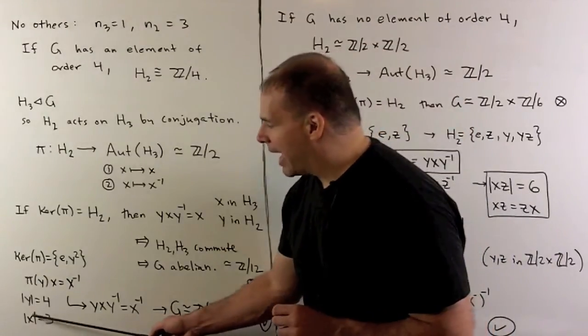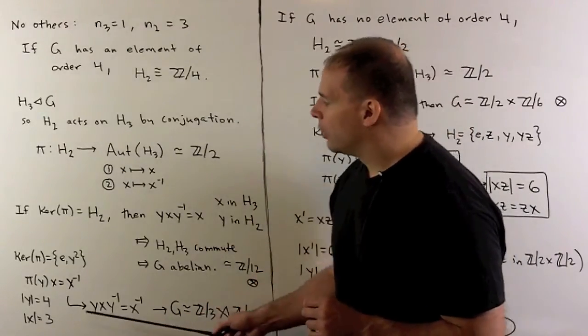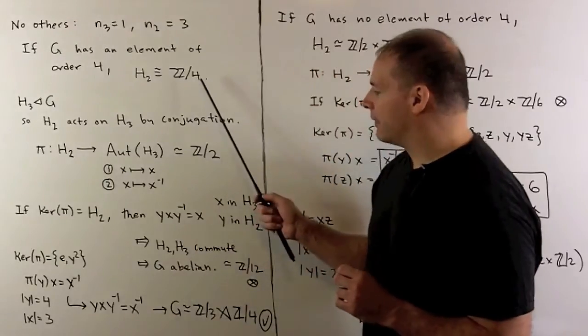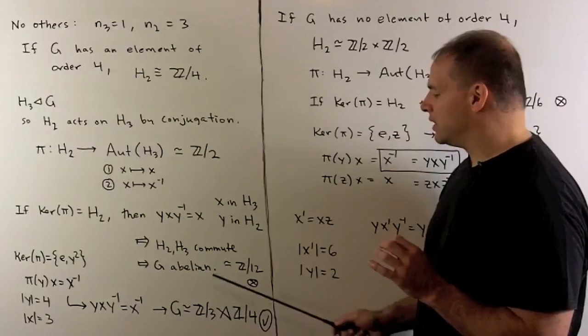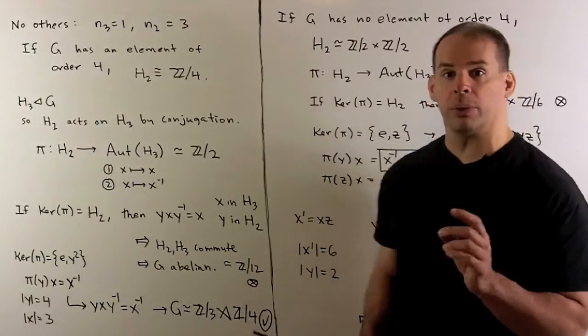We'll pick some x in our Z mod 3. We've picked our y in Z mod 4. So I have the generators and relations for the semi-direct product of Z mod 3 and Z mod 4 as on the previous board.